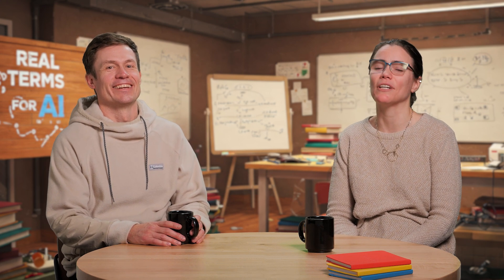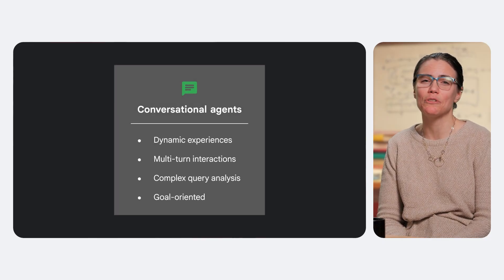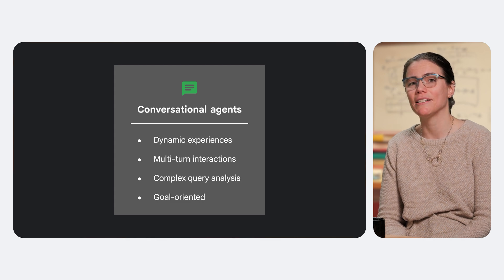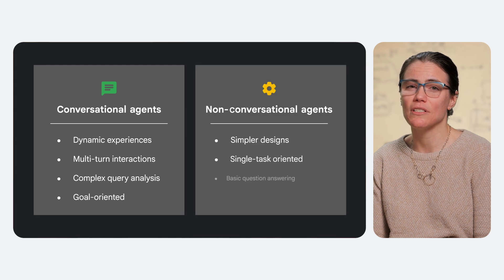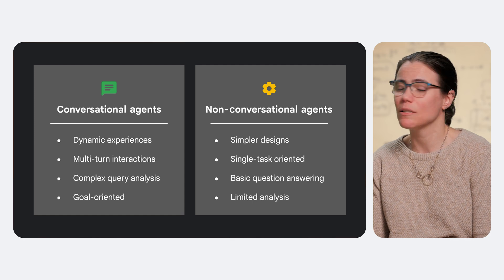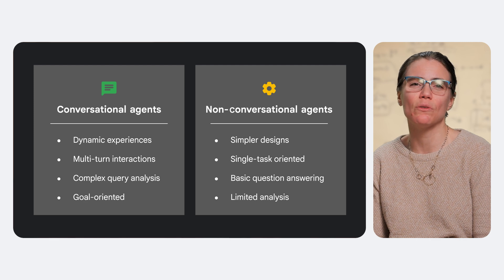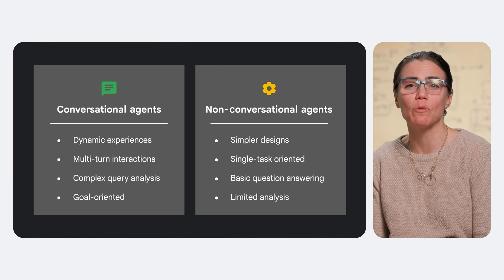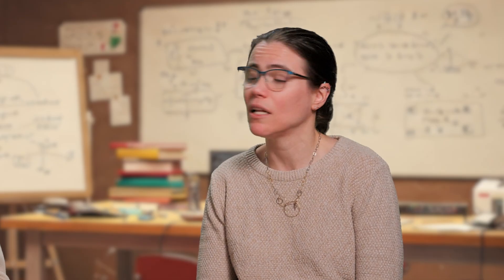One of them likes to talk and one of them does not. As we use these terms on this show, we'll be using the term conversational agent to represent a more advanced set of capabilities used to create dynamic experiences with multi-turn interactions. Non-conversational agents will represent simpler designs where you may not need to pass state between steps or tasks, or designs that perform a single task. We may sometimes refer to these as chatbots in the traditional sense, where the bot can answer simple questions but typically lacks the ability to perform analysis to understand complex user goals or queries. Not that these simpler types of agents are any less important though.